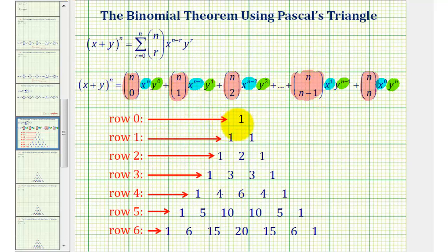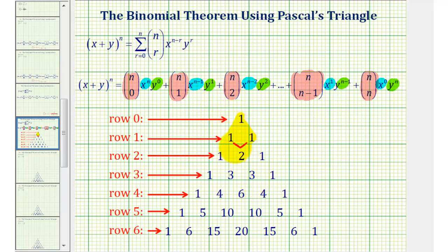To form Pascal's triangle, we start with a triangle of three ones. Each row begins and ends with a one, and for the numbers in between we add the two numbers above: 1+1=2, 1+2=3, 2+1=3, 1+3=4, 3+3=6, 3+1=4, and so on.